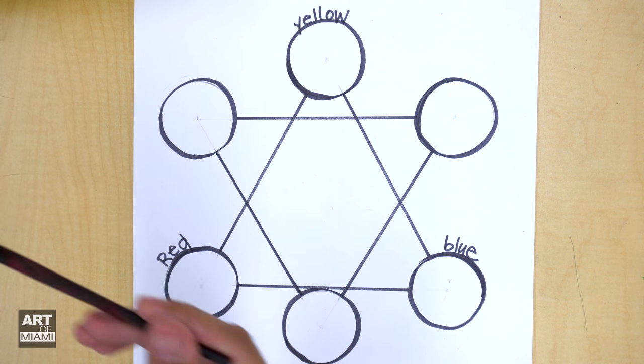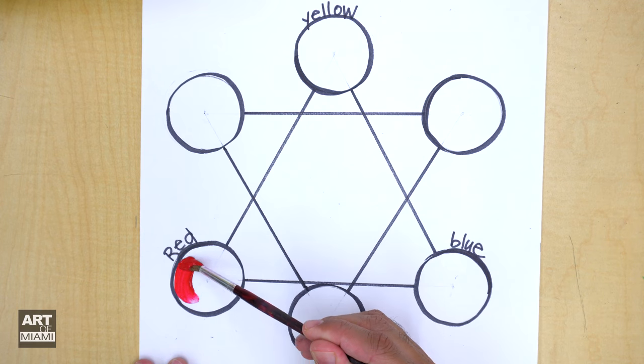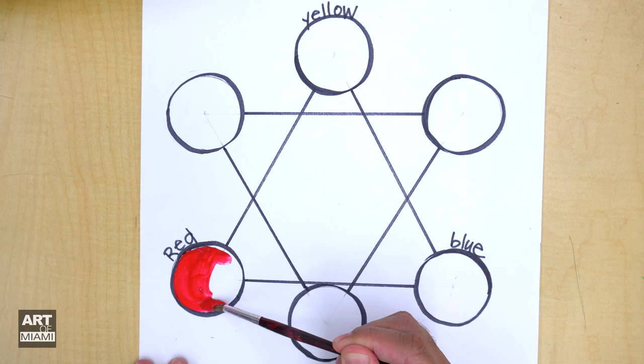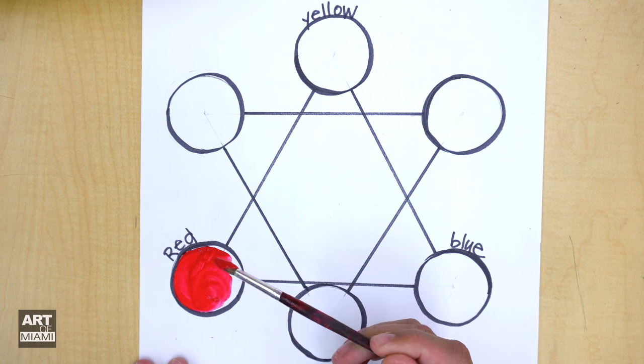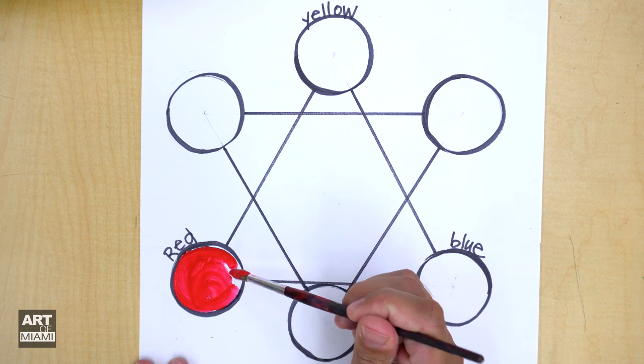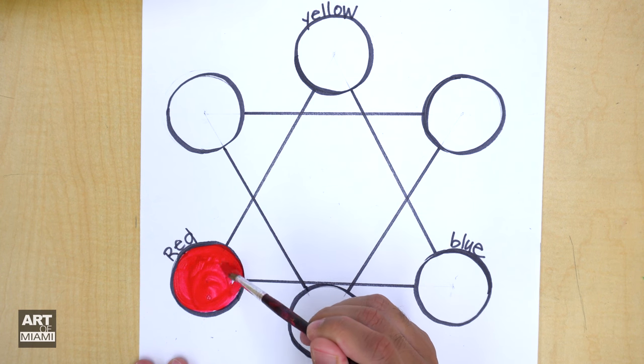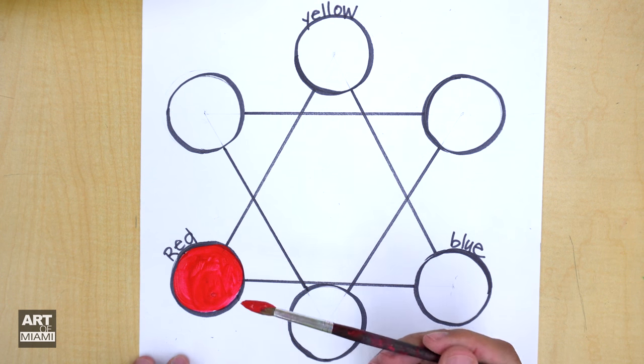All right, let's start with red. There you go. This is tempera paint, so we don't need water for it to work. It's already liquid. Always paint with the tip of the brush. This comes out better.